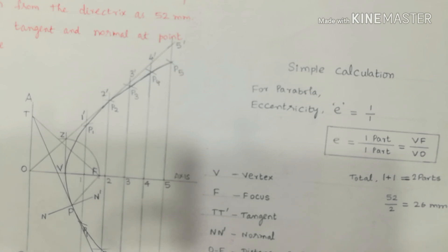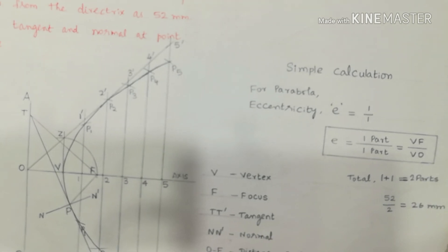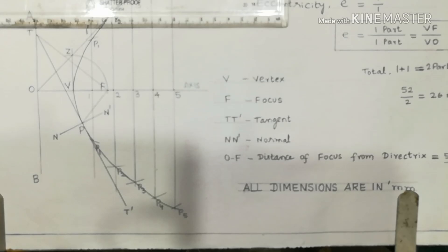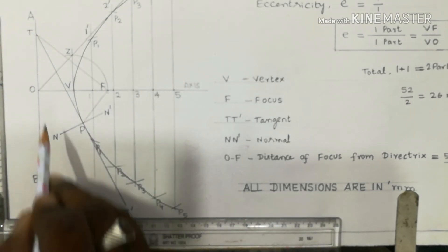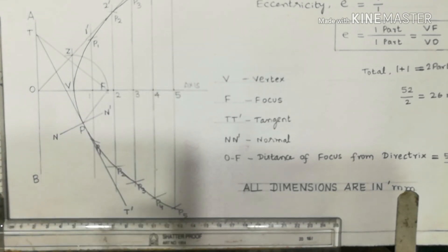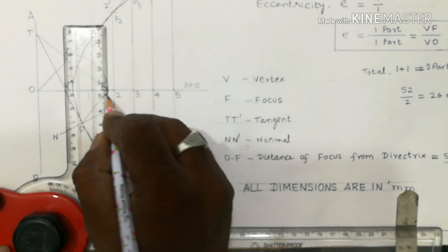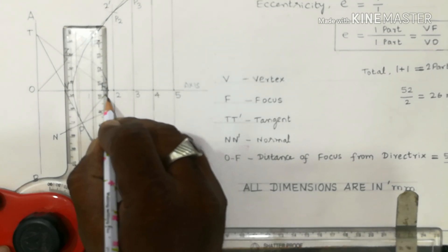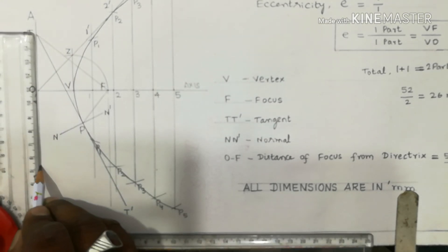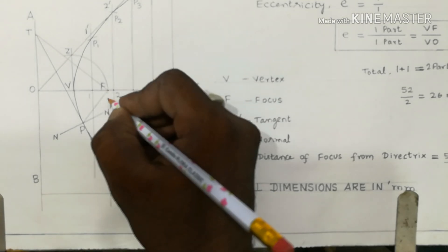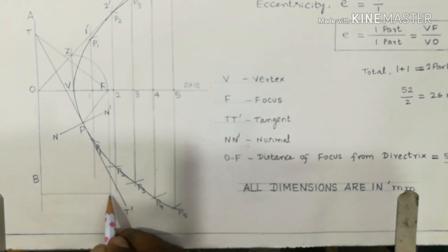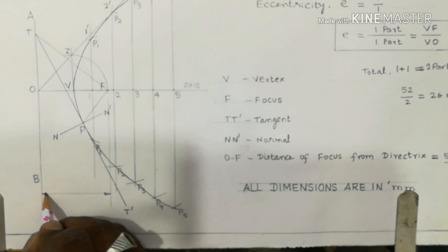Mark the 52 mm dimension showing the distance of focus from the directrix. Draw extension lines from the directrix and from point F with a 1 to 2 mm gap, then draw dimension lines with two arrowheads. The length of each arrow must be greater than the width. Mark the value 52 mm.